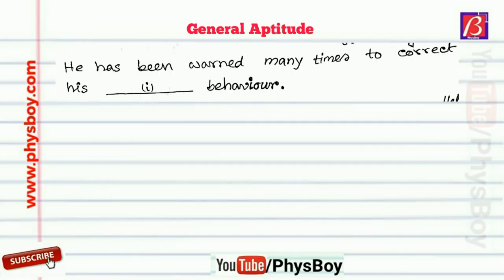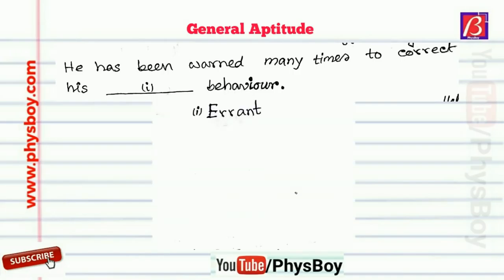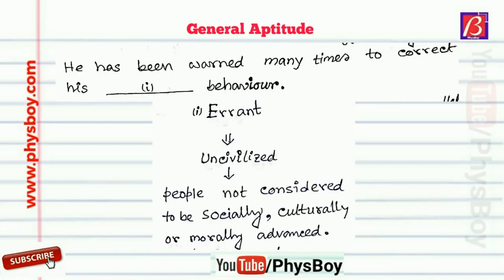The second question was: 'He has been warned many times to correct his dash behavior.' For this question we have to choose an appropriate word from the given alternatives. The appropriate word for this sentence is 'errant'. Errant means uncivilized, or people not considered to be socially, culturally, or morally advanced.